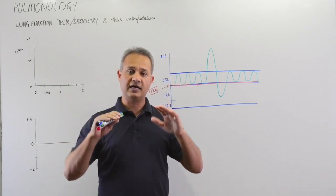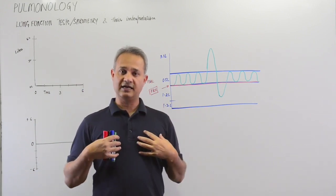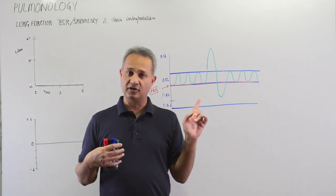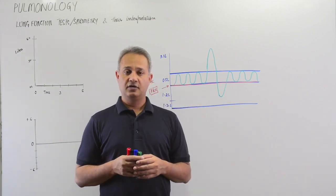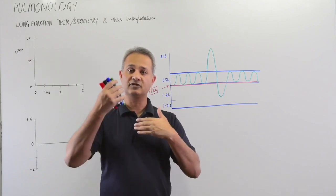Then that volume that is left in my chest, in my lungs, will be called functional residual capacity. So my glottis was open and I was at equilibrium with the environment.